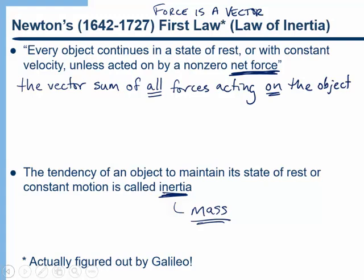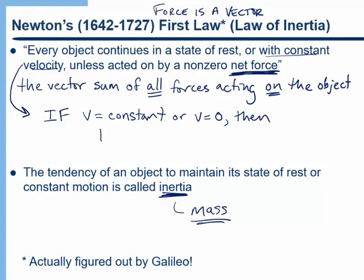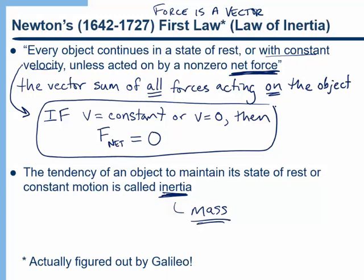We said that an object either continues at rest, in other words, not moving, or moving with constant velocity, unless there is a non-zero net force. So let's write Newton's first law in another way. We could say if V is constant or V equals zero, which is obviously just a special case of being constant, then F net, F subscript net, equals zero. If it's moving with constant velocity, or if the object is not moving at all, then we know the net force is equal to zero.